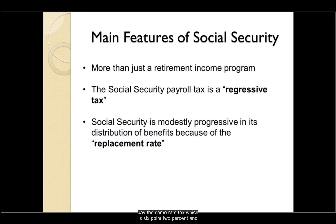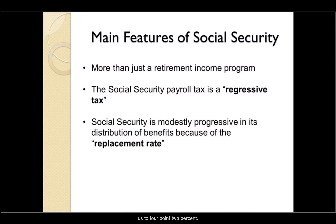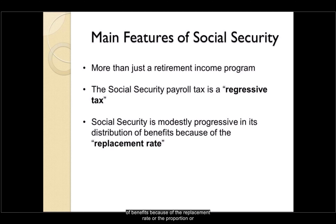That rate is 6.2%, and people making more only pay 6.2% on the first $106,000 of income. However, in 2011, the tax on individual wages was temporarily reduced to 4.2%. This was considered a payroll tax holiday and was intended to stimulate the economy. Social Security is modestly progressive in its distribution of benefits because of the replacement rate — the proportion of wages replaced by Social Security at the point of retirement.